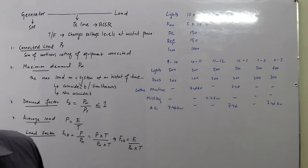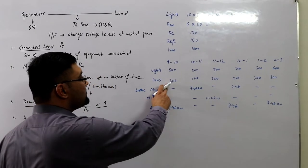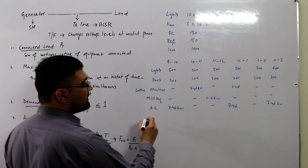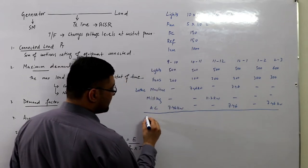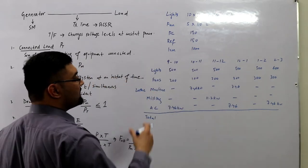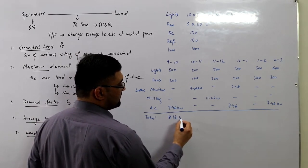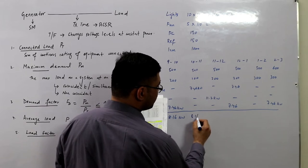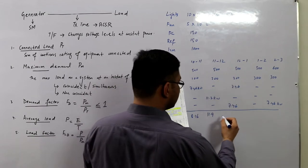Reading from the load pattern table: from 9 to 10, lights use 500 W, fans 200 W, and the AC or air compressor 7.46 kW — total 8.16 kW. From 10 to 11 the total is again 8.16 kW. From 11 to 12 the total rises to 11.9 kW. The next interval gives 15.6 kW, and the following one reaches 19.56 kW.